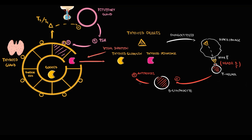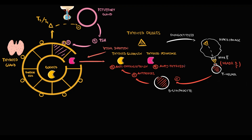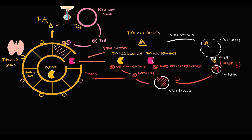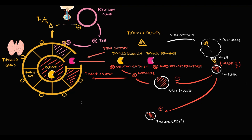B-lymphocytes begin to produce antibodies against thyroid proteins: antibodies against thyroglobulin (anti-thyroglobulin antibodies) and antibodies against thyroid peroxidase (anti-thyroid peroxidase antibodies). These antibodies are highly reactive and cause severe direct injury to thyroid cells, resulting in their destruction. Additionally, T-helpers activate T-killers, which in their activated state massively infiltrate the thyroid gland and cause severe damage to thyroid cells.